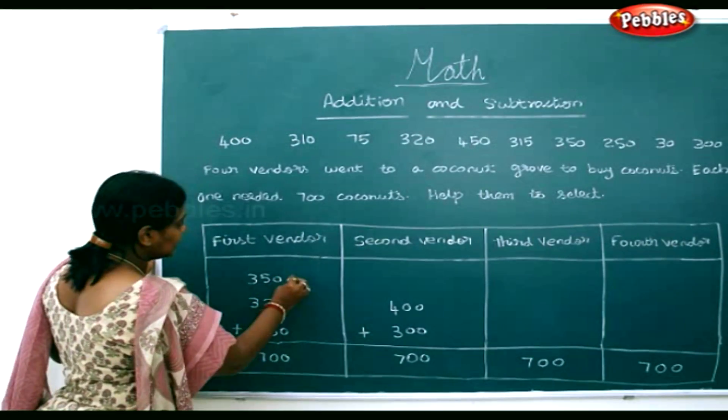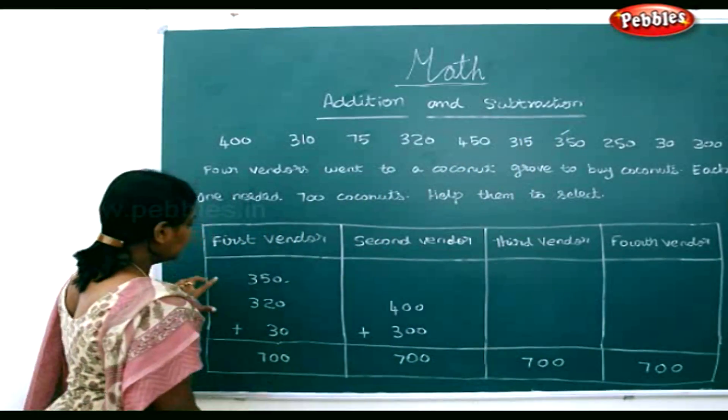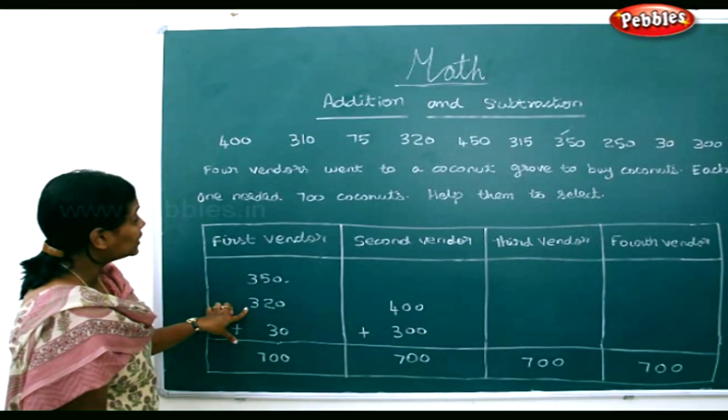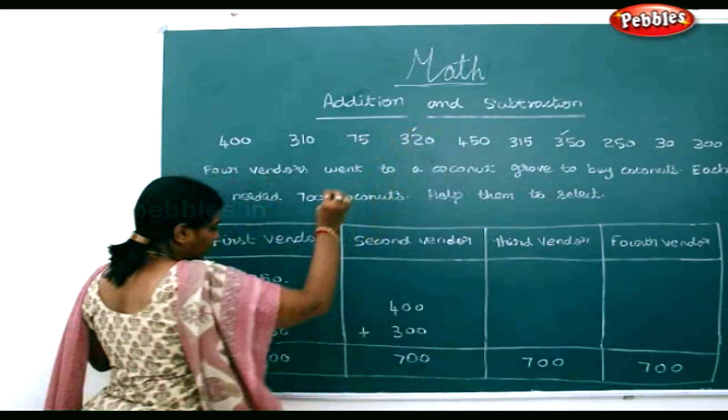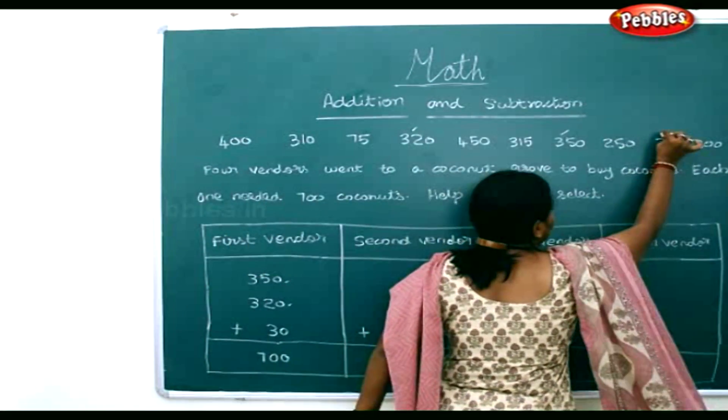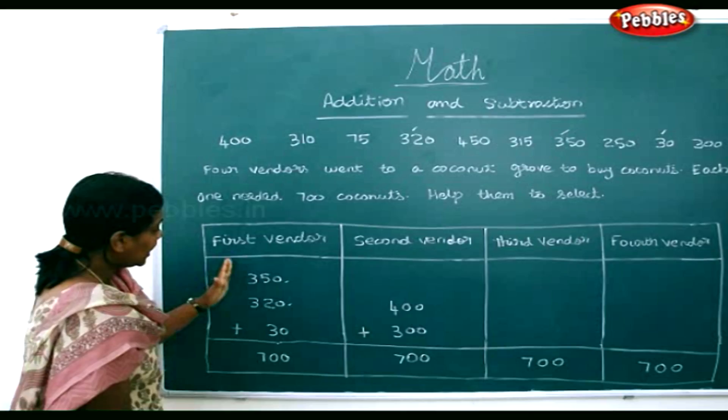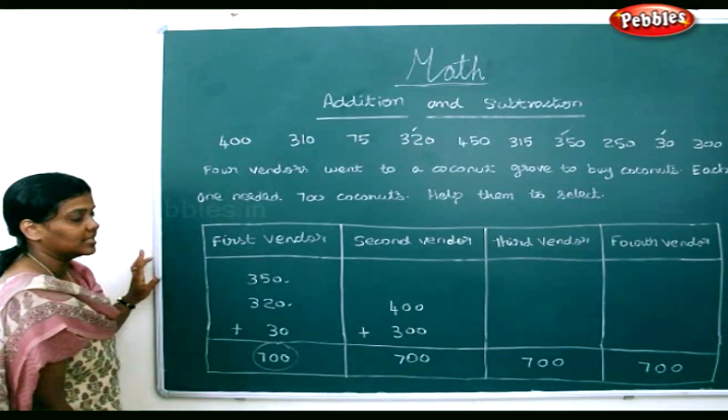The first vendor selected 350 coconuts. Then he went again to find 320 coconuts, then again 30 coconuts. So with the help of these three, he formed 700 coconuts.